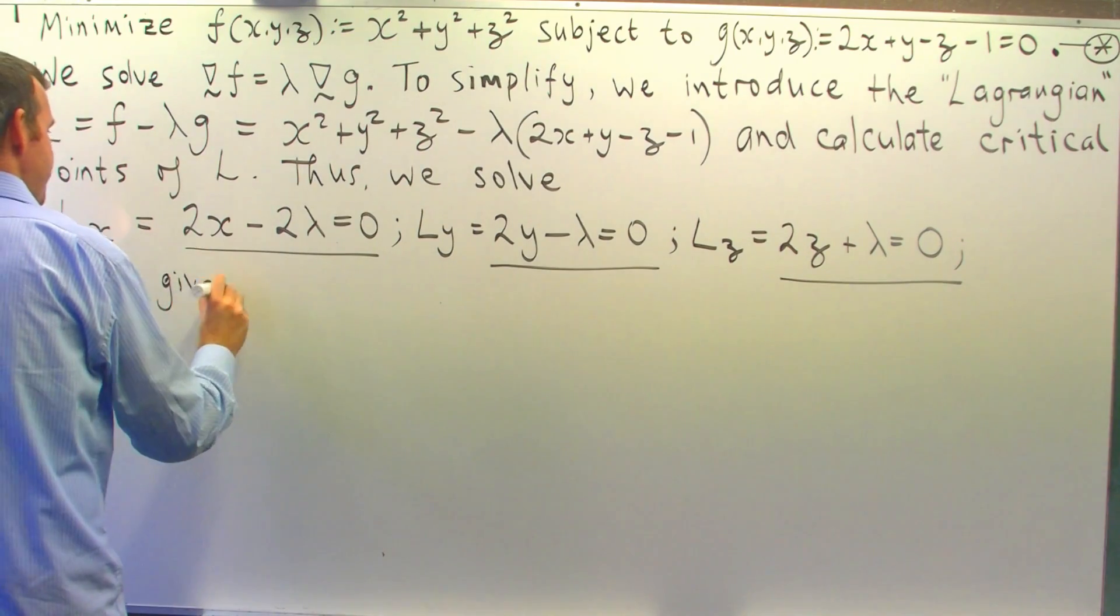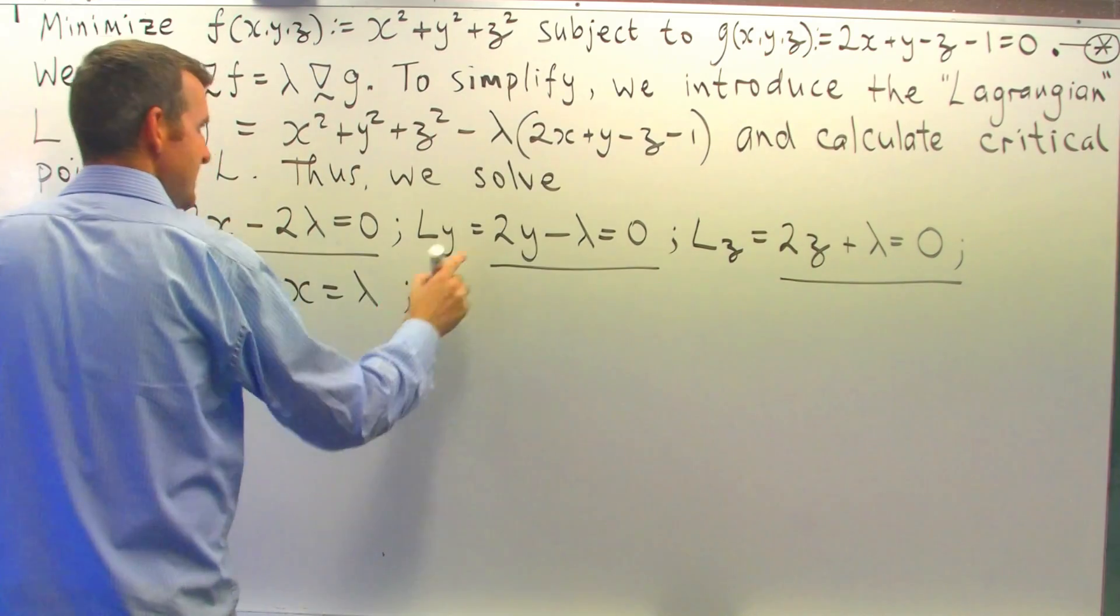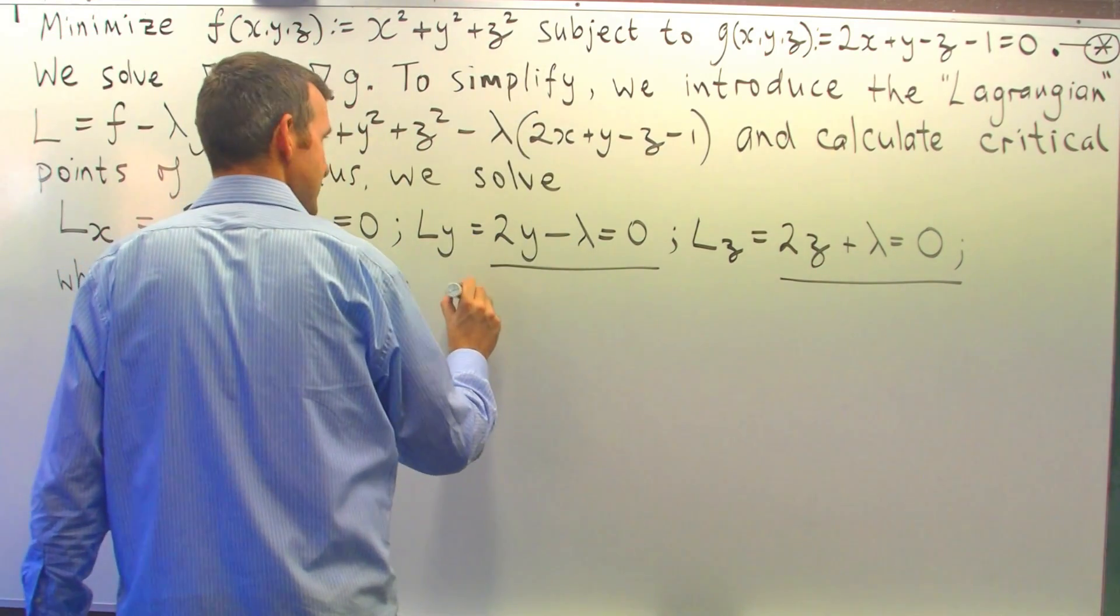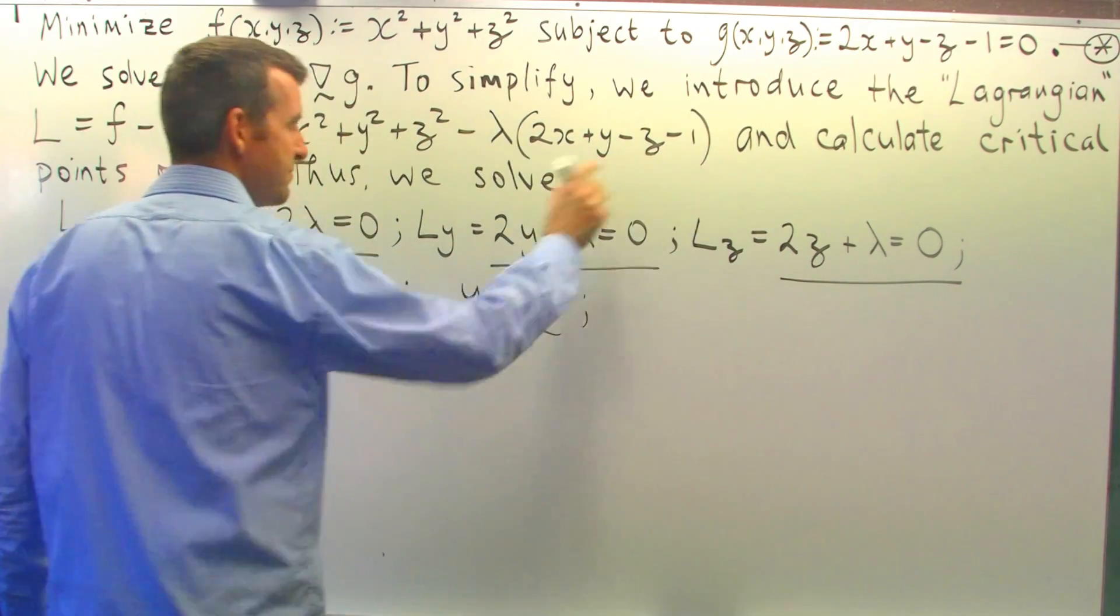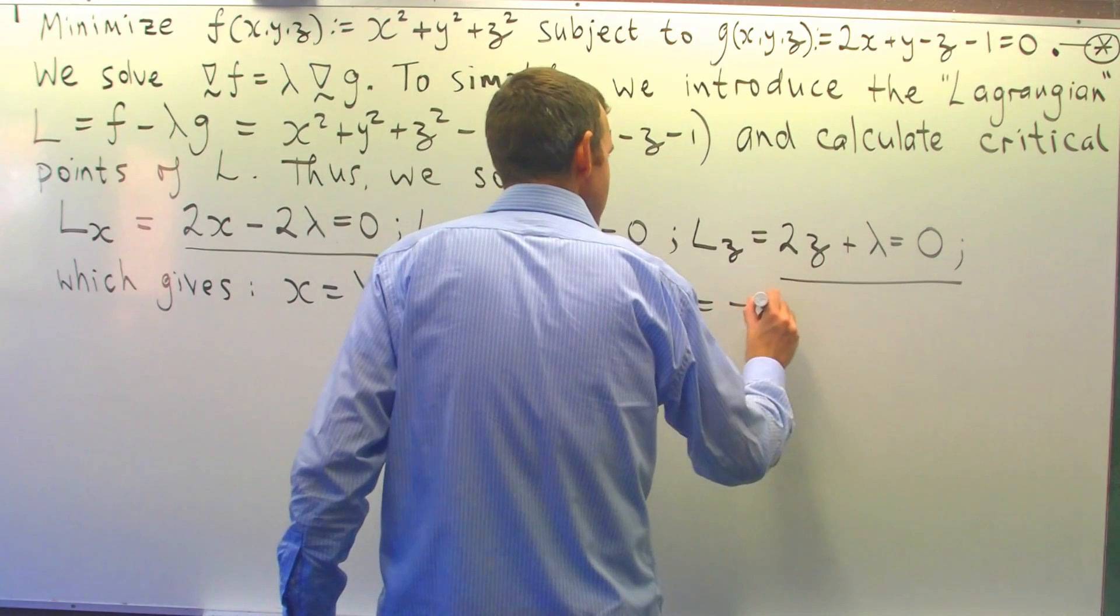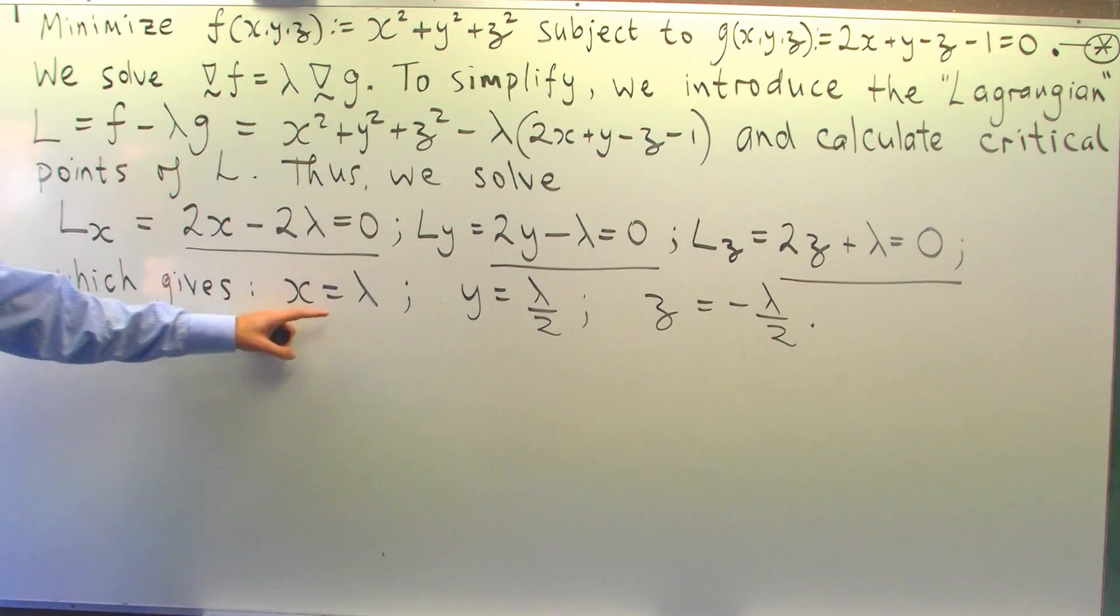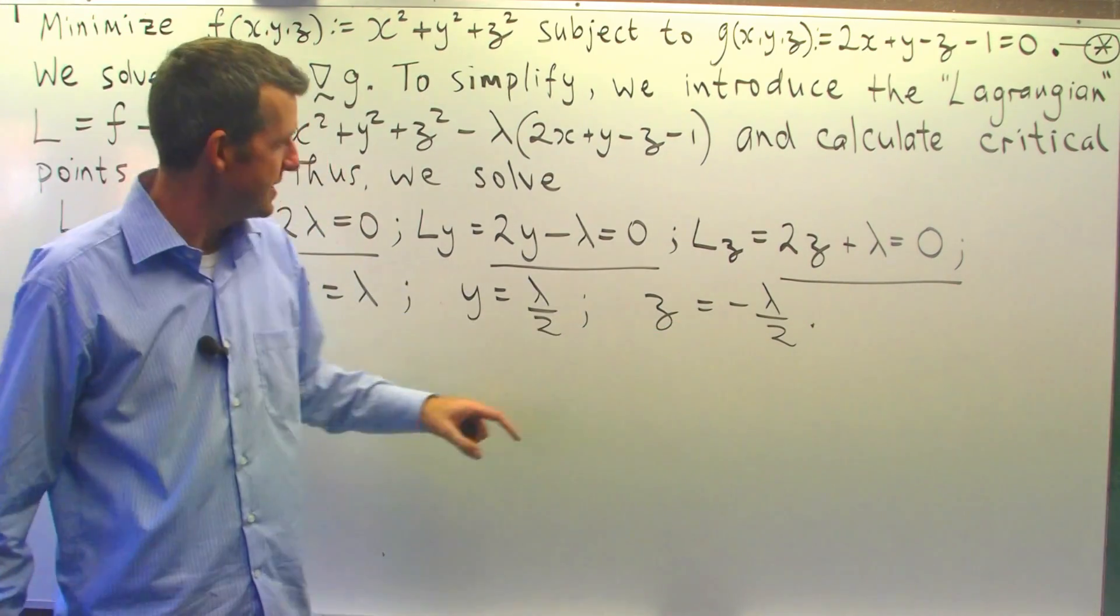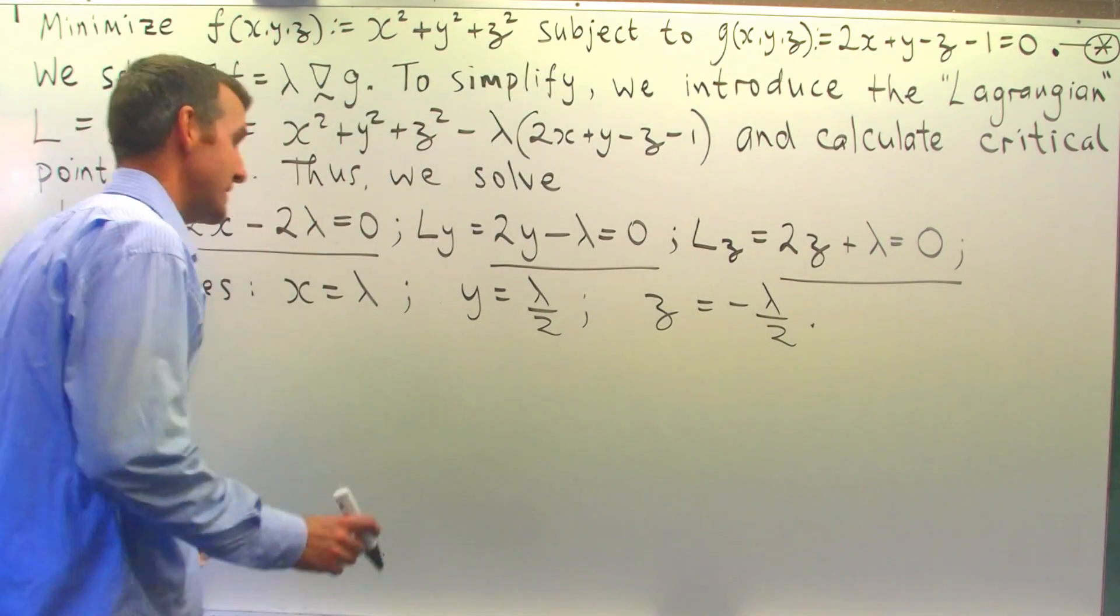Now from the first equation here, I get x equals lambda. From the second equation, I get y equals lambda on 2. And from the third equation, I get z equals minus lambda on 2. What we're going to do now is take these expressions and substitute back into the constraint equation.